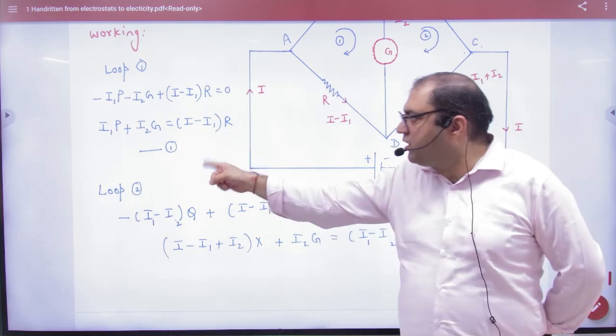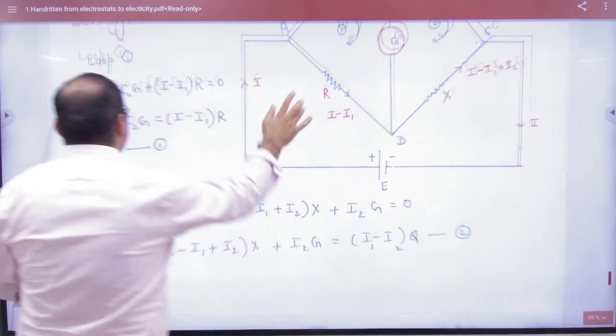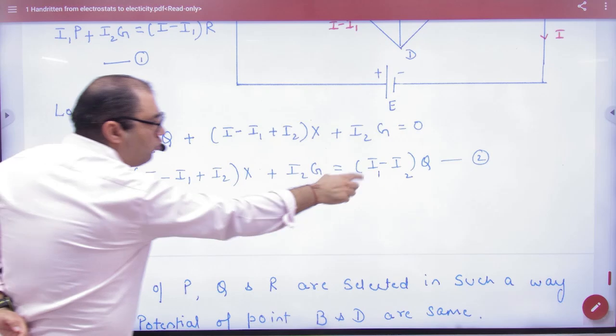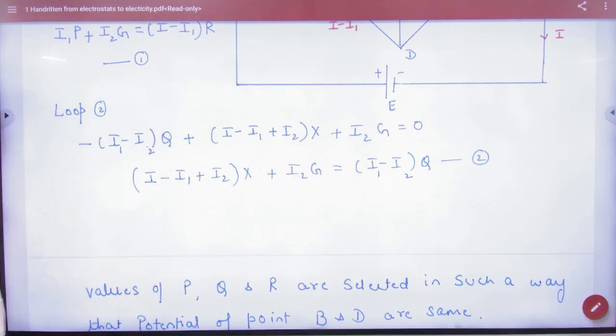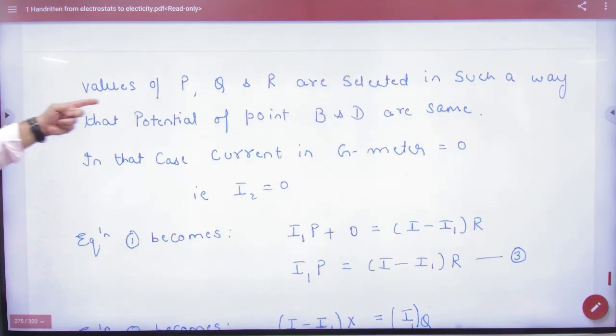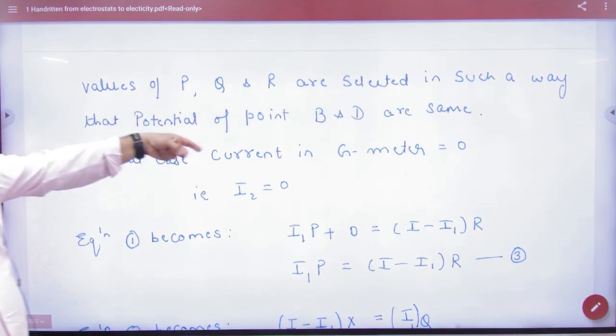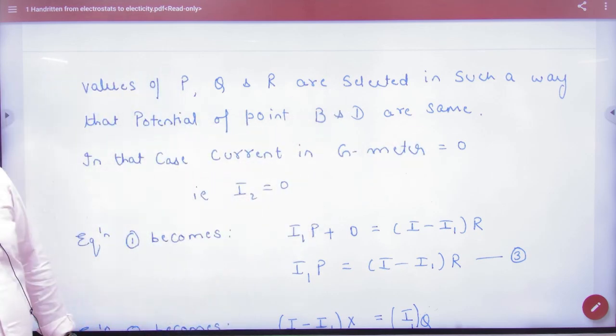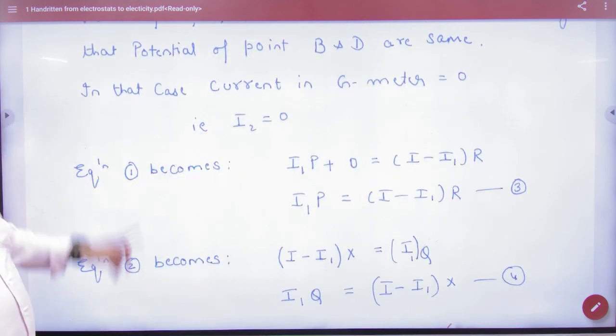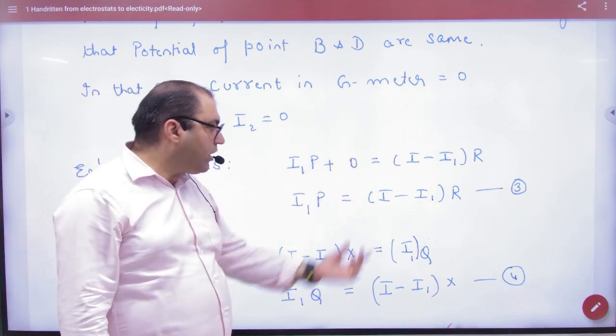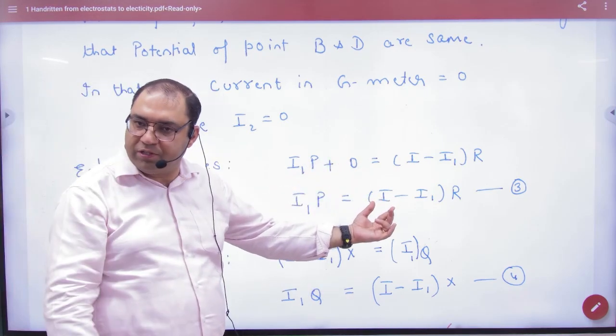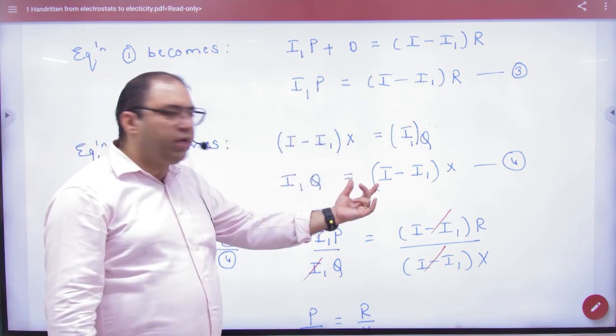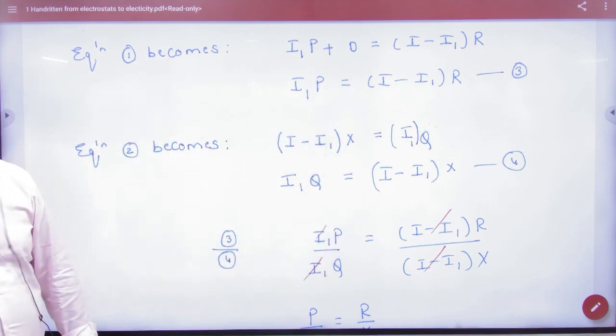So now work on equation number one. Wherever you see I2 in equation number one, make it zero. In equation number two, wherever you see I2, make it zero here as well. See, the values of PQR are selected in such a way that B and D potentials become same and galvanometer reading becomes zero. So in the equations, we have to make I2 zero. In equation number one, putting I2 equals zero, equation number one modifies to equation number three. Similarly, in equation number two, putting I2 equals zero, this becomes equation number four.